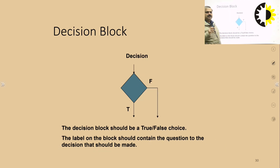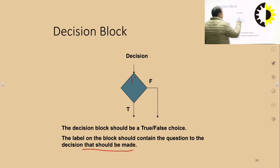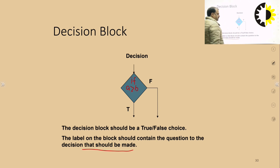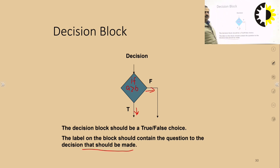Another important element is the decision block. We give a condition or question to the decision that should be made. For example, we write 'if a > b'. If it is true, execution goes one way; if it is false, it goes another way. Such decisions are represented using the diamond symbol.